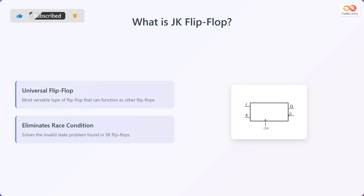The JK flip-flop is a universal flip-flop. It is the most versatile type of flip-flop and can function as other flip-flops. It also eliminates race conditions and solves the invalid state problem found in SR flip-flops.